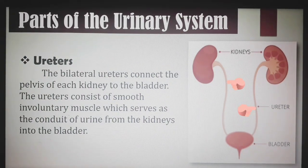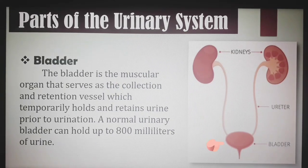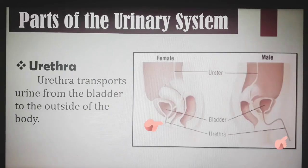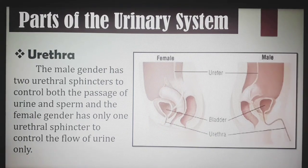The bilateral ureters connect the pelvis of each kidney to the bladder. The ureters consist of smooth involuntary muscle, which serves as a conduit for urine from the kidneys into the bladder. The bladder is the muscular organ that temporarily holds and retains urine prior to urination. A normal urinary bladder can hold up to 800 ml of urine. The urethra transports urine from the bladder to the outside of the body. The male has two urethral sphincters to control both urine and sperm passage, while the female has only one urethral sphincter.